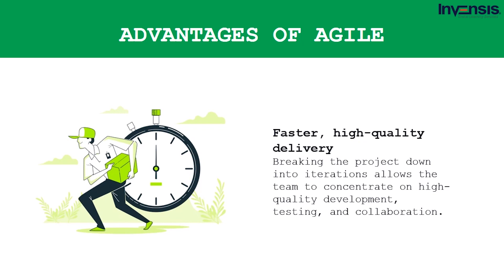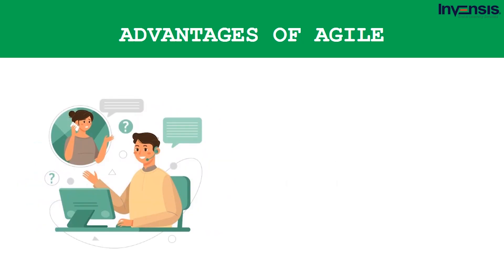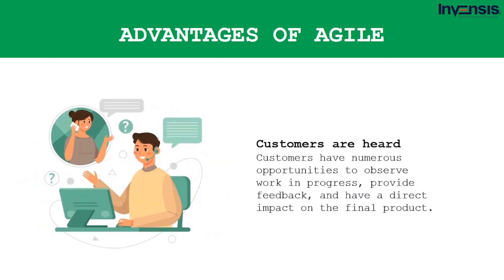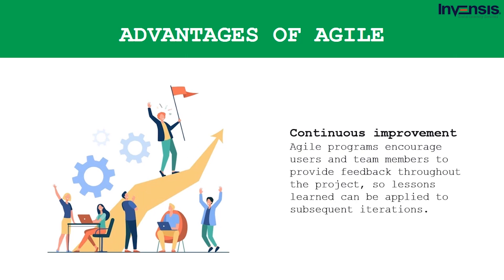With continuous, successive iterations, high-quality software may be provided faster. Fourth, Agile emphasizes strong team interaction through frequent communication and face-to-face contact, enabling team members to take responsibility for their tasks. Fifth, customers are heard — they have numerous opportunities to observe work in progress, provide feedback, and directly impact the final product. Finally, Agile programs encourage continuous improvement by inviting users and team members to provide feedback throughout the project, so lessons learned can be applied to subsequent iterations.